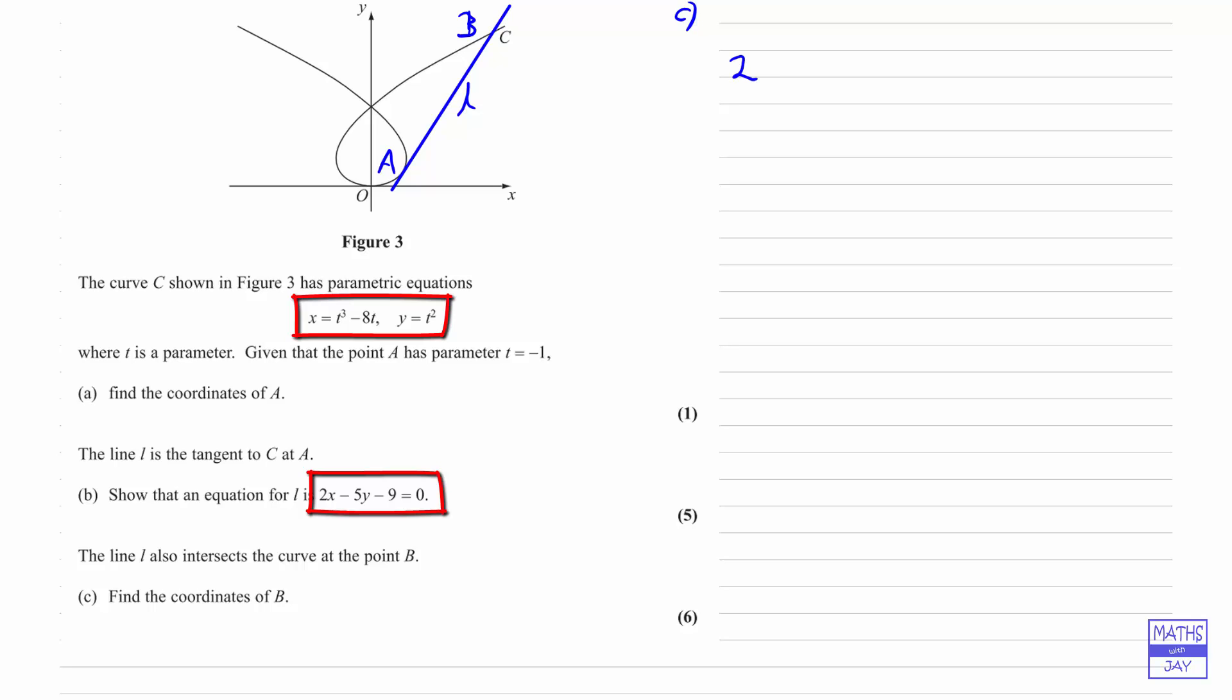So when we do that, we get 2 times, so the value of X is T cubed minus 8T, and then we've got minus 5Y, so that's minus 5 times T squared minus 9 equals 0. So that's the equation of the line 2X minus 5Y minus 9 equals 0, and we've substituted in the X in terms of T and the Y in terms of T.